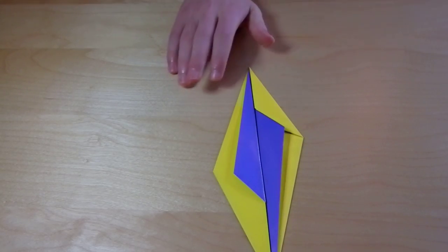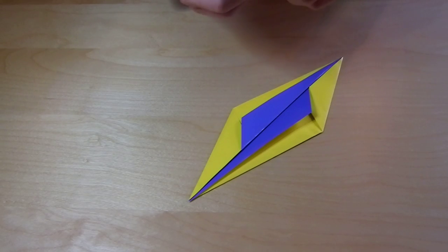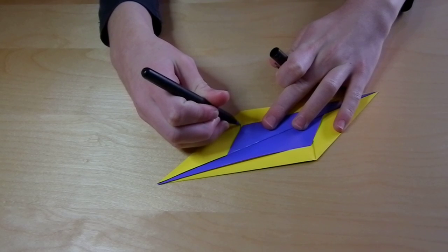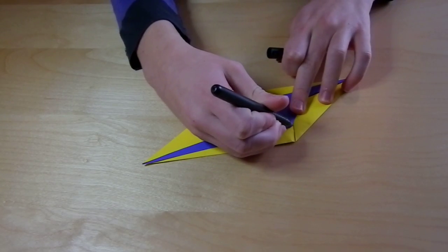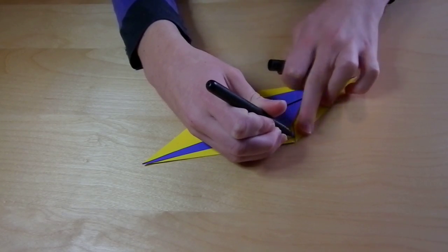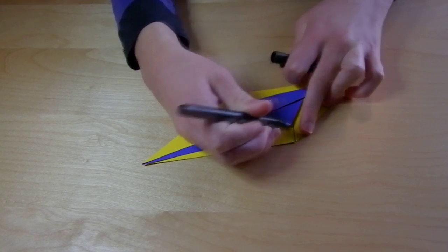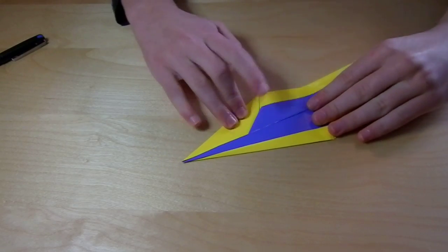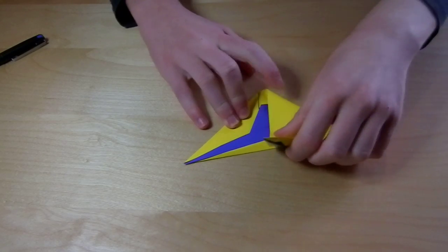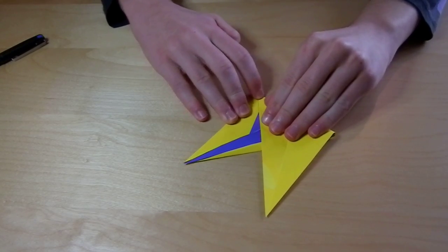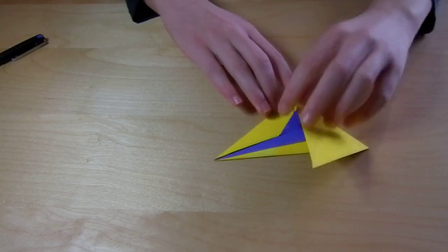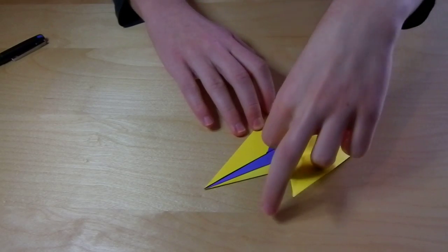And now I want you to notice this edge here and here, because we are going to use these. We're going to pull over this edge and align it with this crease. We just do the same thing in the opposite direction to make sure it aligns nicely.